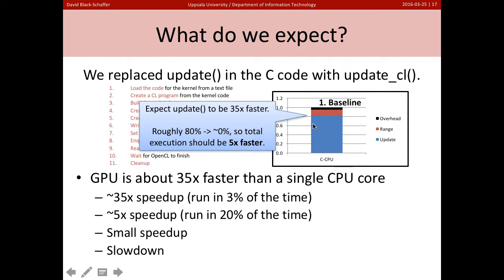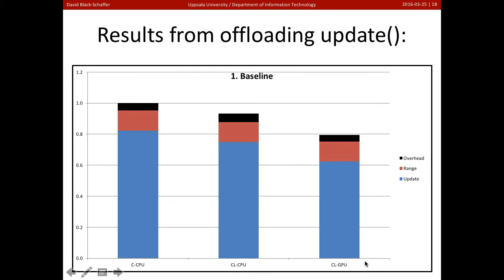We expect update here to be 35 times faster. So this blue part should basically, we should lose almost all of it. And this is the speed we should have, the amount of time we should take overall. So roughly 80% of this should be 35 times faster. So overall, we expect to be at five times faster when we run this. Now, let's take a look at what actually happens.